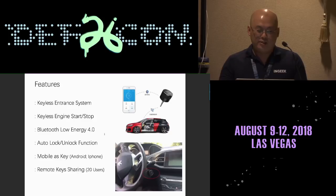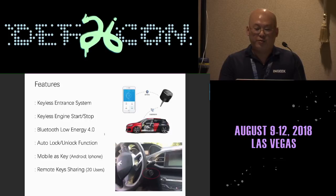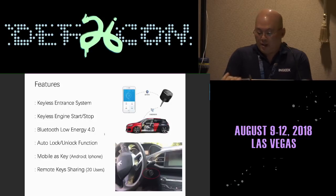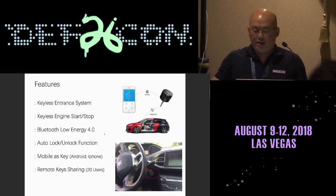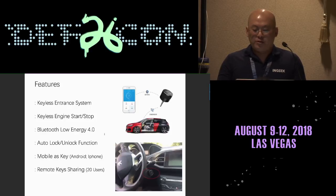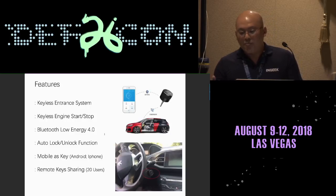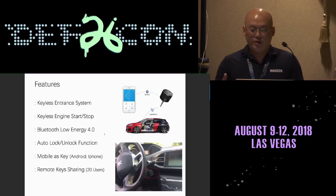One interesting feature I found is key sharing. This is a major advantage distinguishing Army Key from other car key systems — you can share access to different users, even friends in different countries. The device must always be left inside the car. When you come to the car and want to open it, you pair with Army Key via Bluetooth and send the unlocking command; Army Key then sends an RF signal to unlock the car.